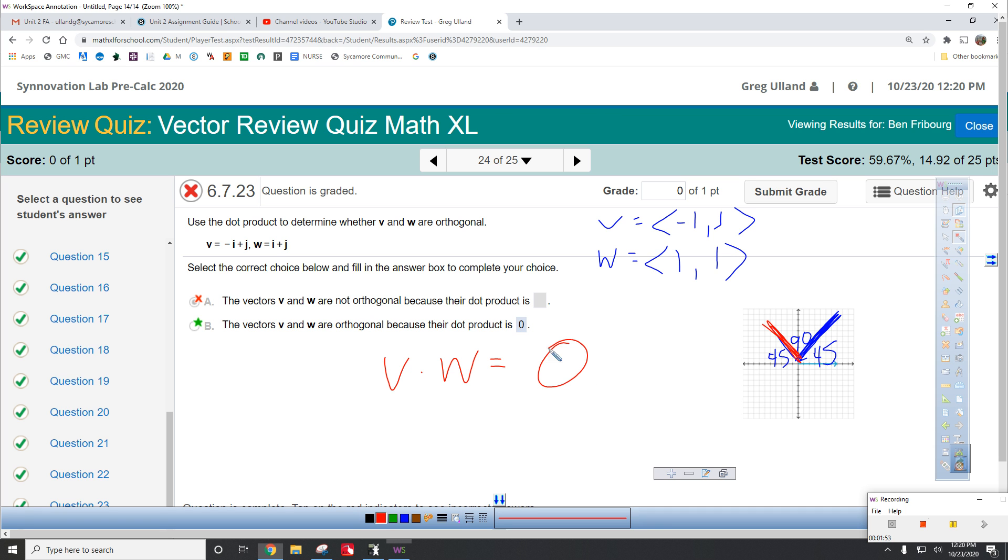And notice that V dot W is zero. See that? So think about it. From my previous little equation, you do cosine of theta is zero over, I think this would be radical 2 on the bottom, but don't worry about that. If cosine is zero, then theta has to be 90. That's how that works. Boom.